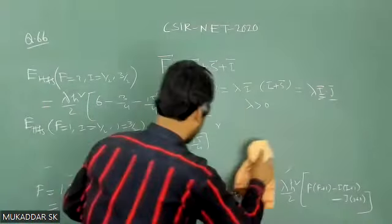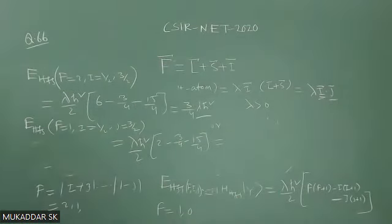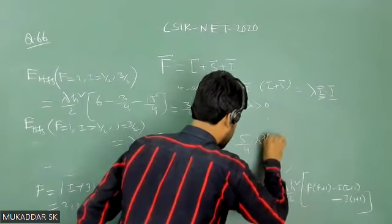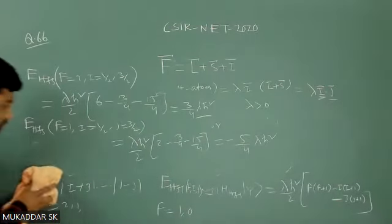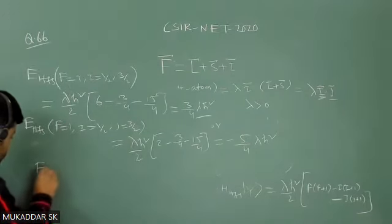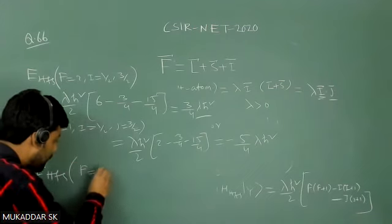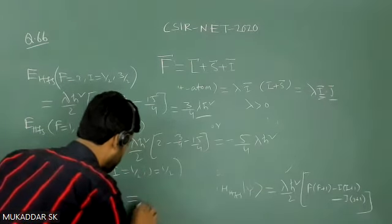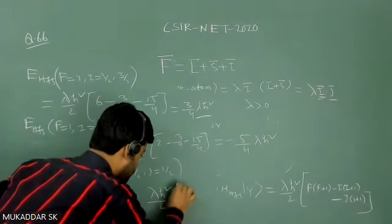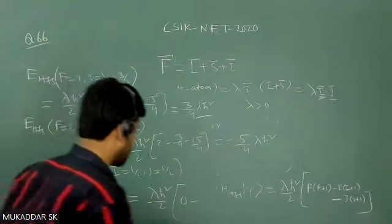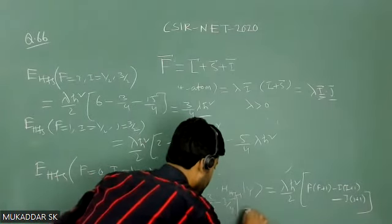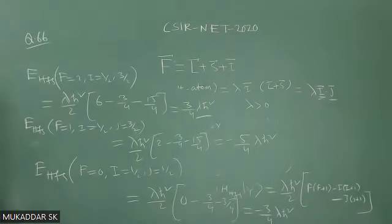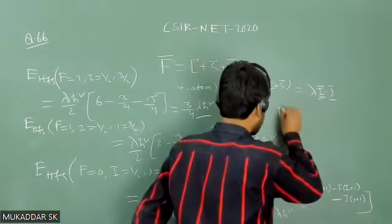This gives E_HFS = −(5/4)λℏ² for F = 1, I = 1/2, J = 3/2. Similarly, for F = 0 arising from I = 1/2 and J = 1/2: E_HFS = (λℏ²/2)[0 − 3/4 − 3/4], which gives E_HFS = −(3/4)λℏ².